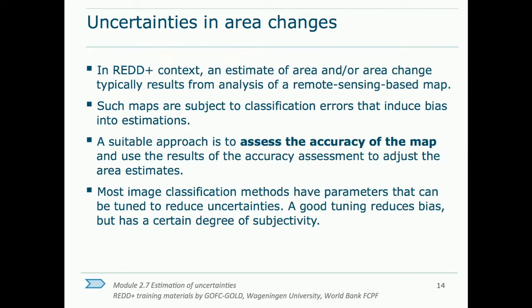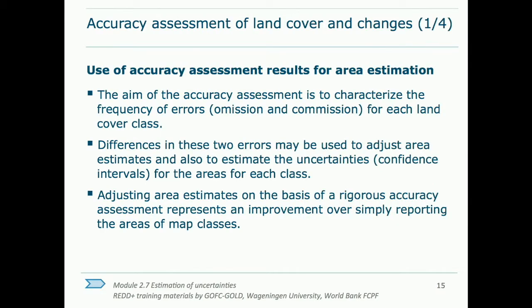The accuracy of these maps can be assessed through an accuracy assessment, and the results can be used to remove the bias in the area estimates. The assessment results can also be used to tune the parameters in the classification technique, but this is often subjective to the technician and will never result in a perfect classification regime. All maps based on remotely sensed data include classification errors, and the role of the accuracy assessment is to characterize the frequency of errors for each land cover class in the map. Each class may have errors of both omission and commission, and in most situations these are not equal. Differences in these two errors may be used to adjust area estimates and also to estimate the uncertainties, or confidence intervals, for the areas of each class.